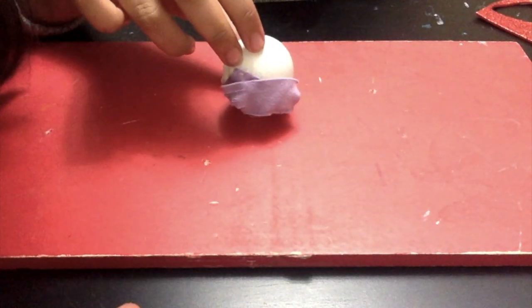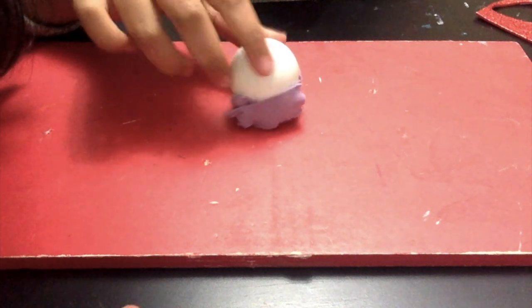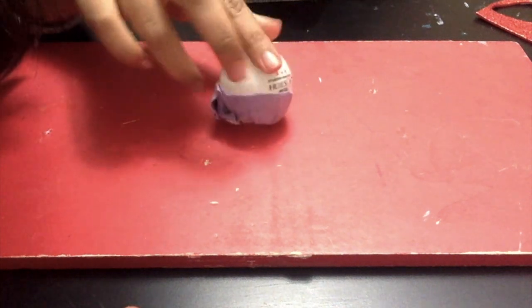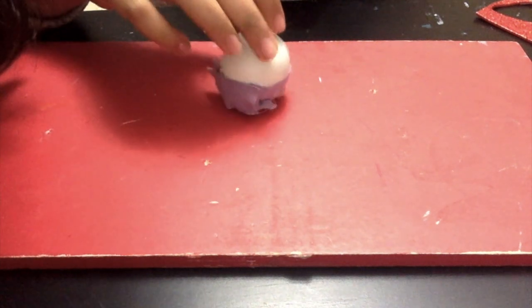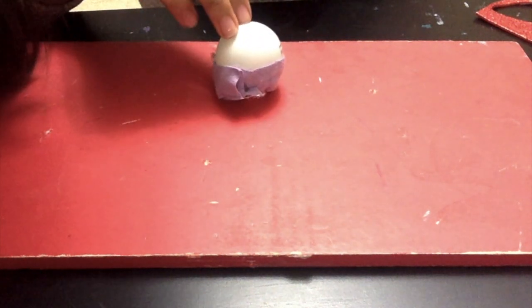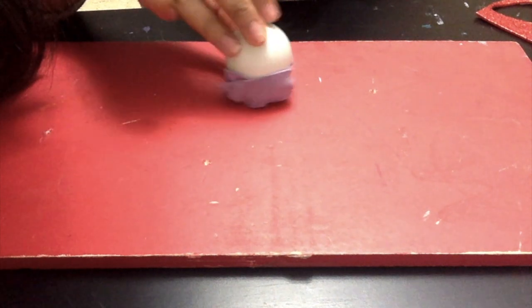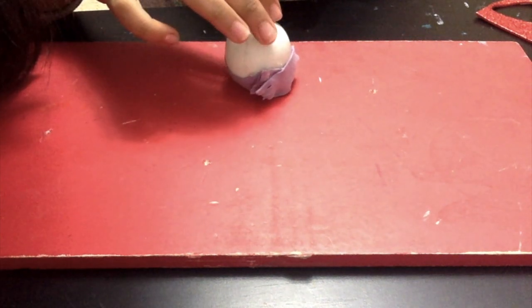Next, what you would do is wrap your purple fabric around the ping pong ball and hot glue it onto the back and all over the sides. And at the ends you would want to cut little fringes, which is optional.